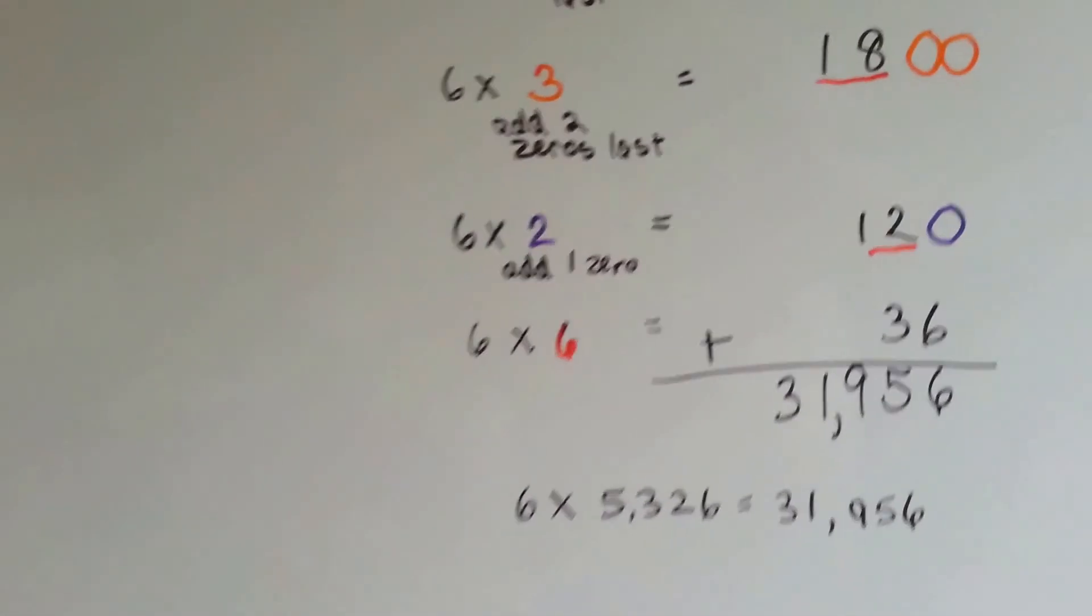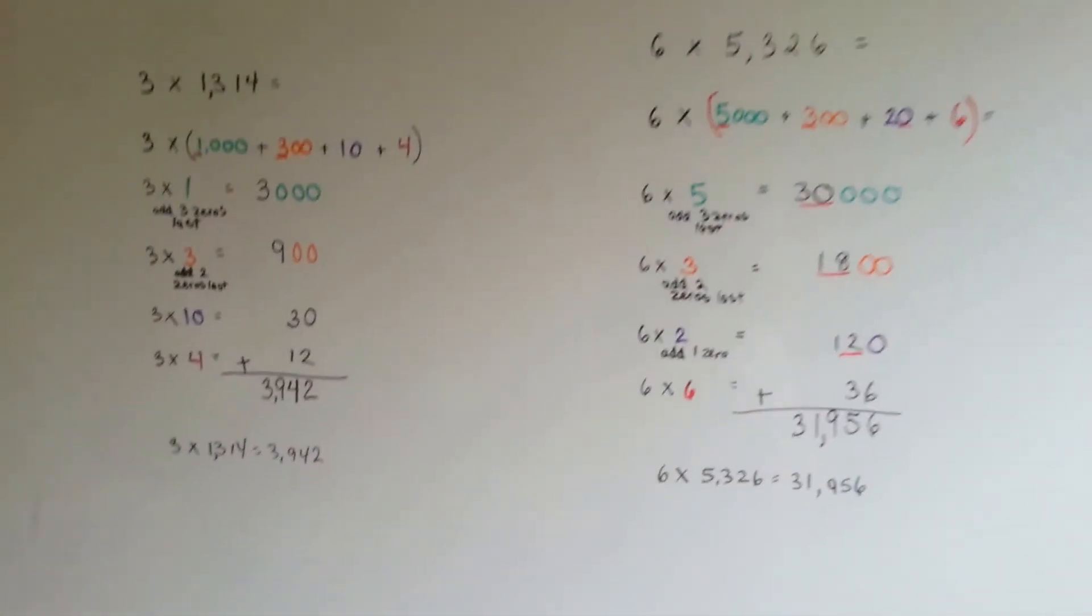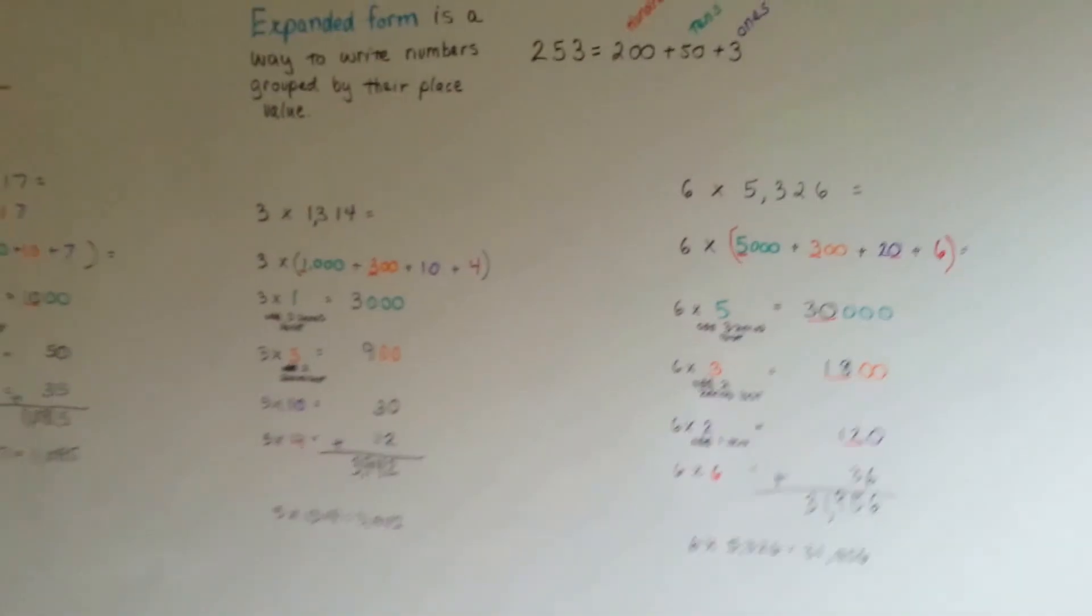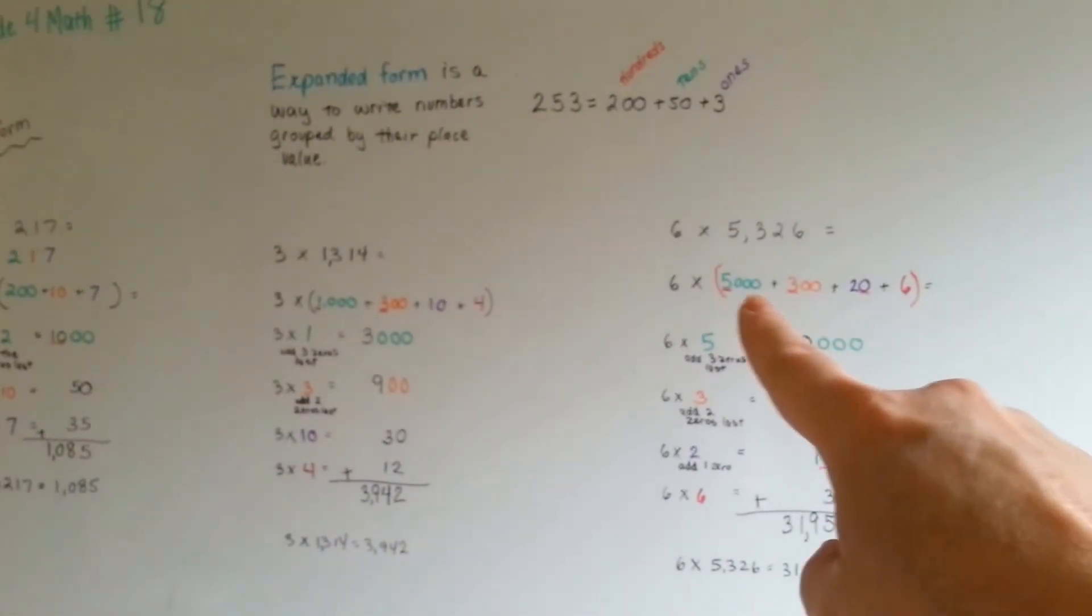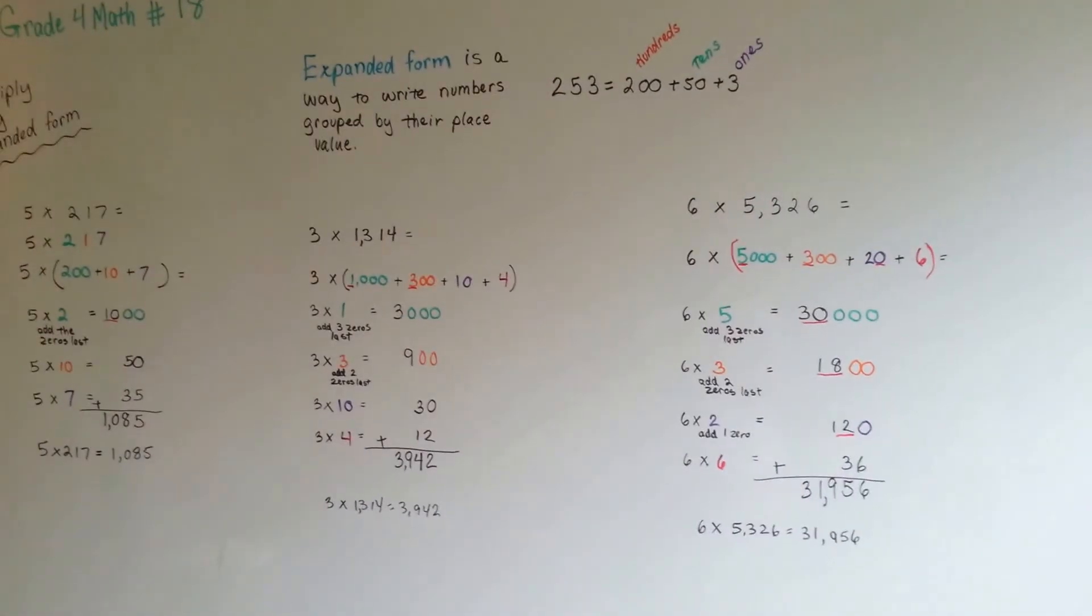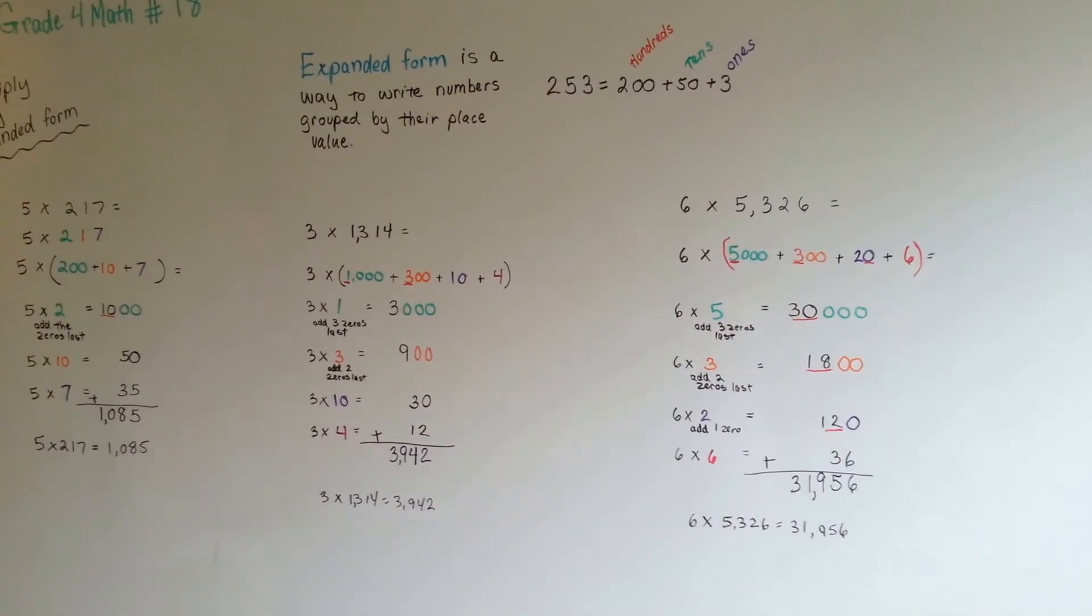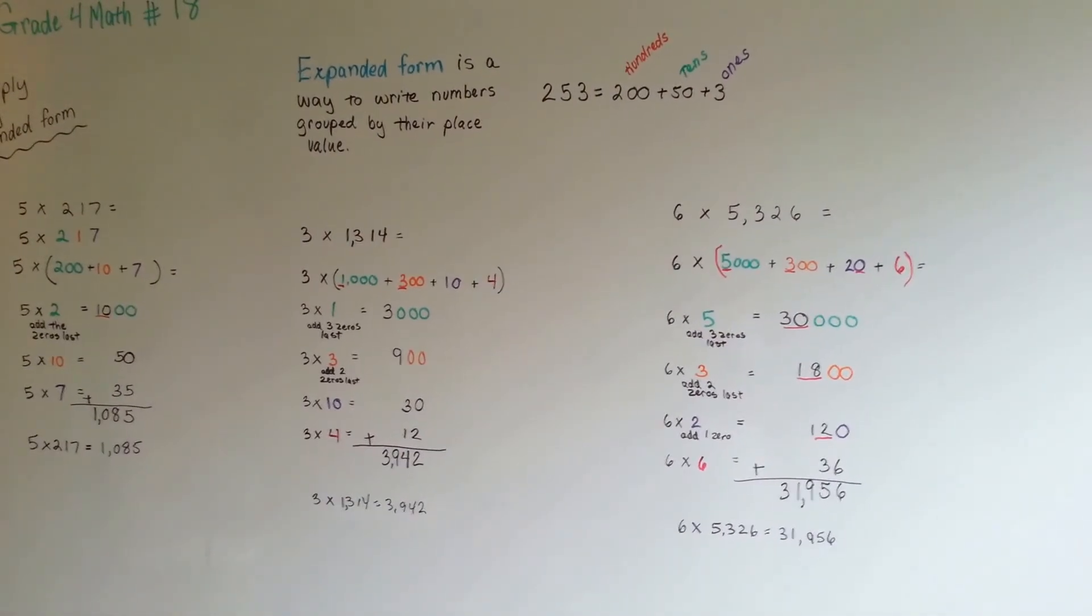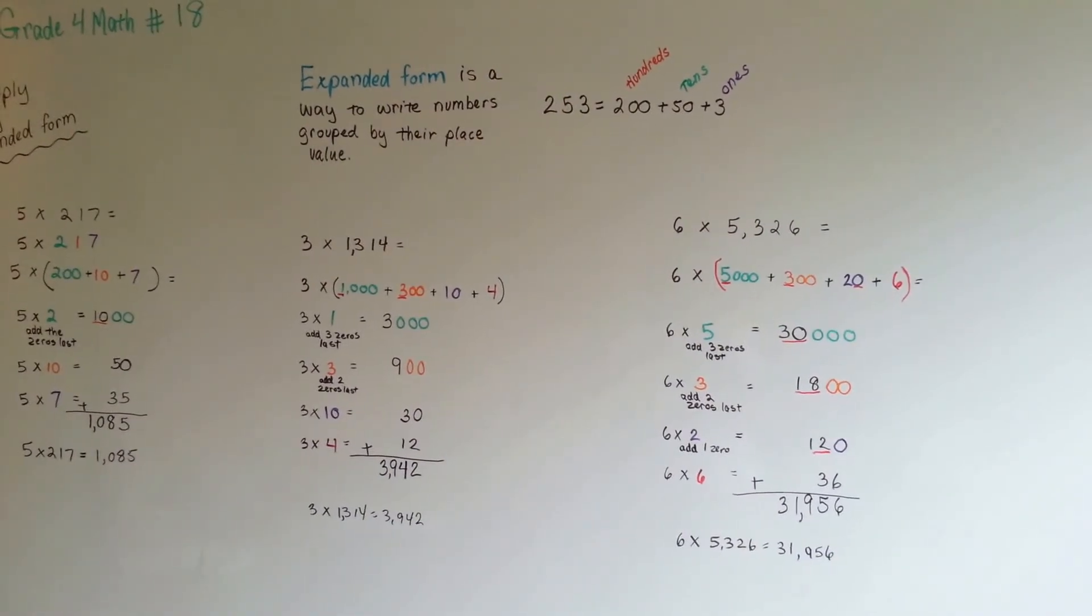Wasn't that easy? That's using expanded form to multiply, and it's getting partial products. 6 times 6, just adding the zeros on after you multiply the thousands. And just break it up into expanded form, then multiply, and then add. We'll keep going, and I'll see you next video.